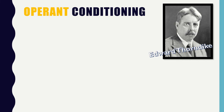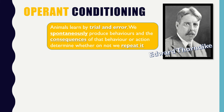Operant conditioning was first introduced by Edward Thorndyke, and it is different to classical conditioning in the sense that Thorndyke proposed that animals and humans learn by a process of trial and error. He argued that humans and animals initially spontaneously produce certain behaviours, but then it's the consequences of those actions that decide whether or not we choose to repeat or avoid that behaviour.